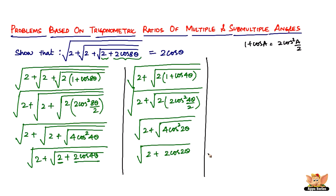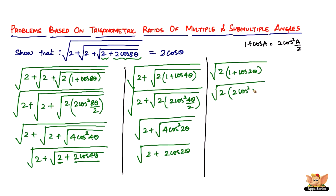Again, take out 2 from 2 + 2cos2θ to get 2(1 + cos2θ). Now 1 + cos2θ = 2cos²(2θ/2) = 2cos²θ. So we have 2 × 2cos²θ = 4cos²θ under the square root. √4 = 2 and √(cos²θ) = cosθ, giving us 2cosθ.